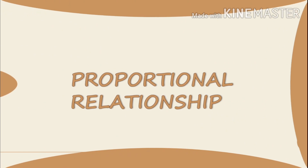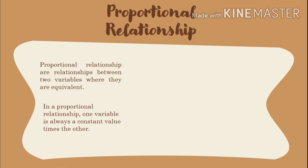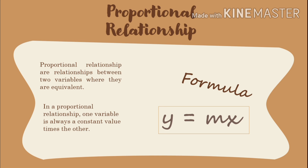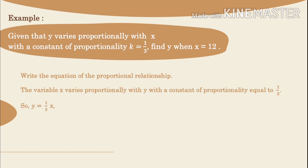Proportional Relationship. Proportional relationships are relationships between two variables where they are equivalent. In a proportional relationship, one variable is always a constant value times the other. The formula is y equals m times x. Example: given that y varies proportionally with x, with a constant of proportionality k equal to 1/3, find y when x equals 12. Write the equation of the proportional relationship. The variable x varies proportionally with y with a constant of proportionality equal to 1/3.